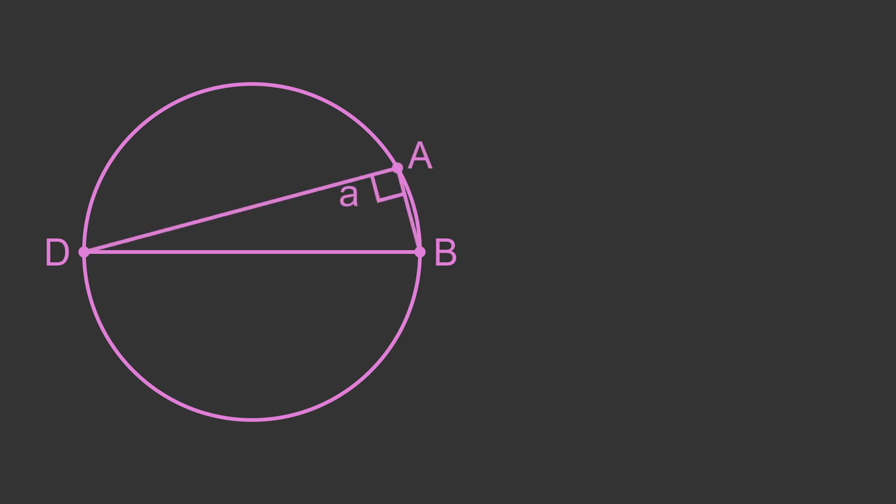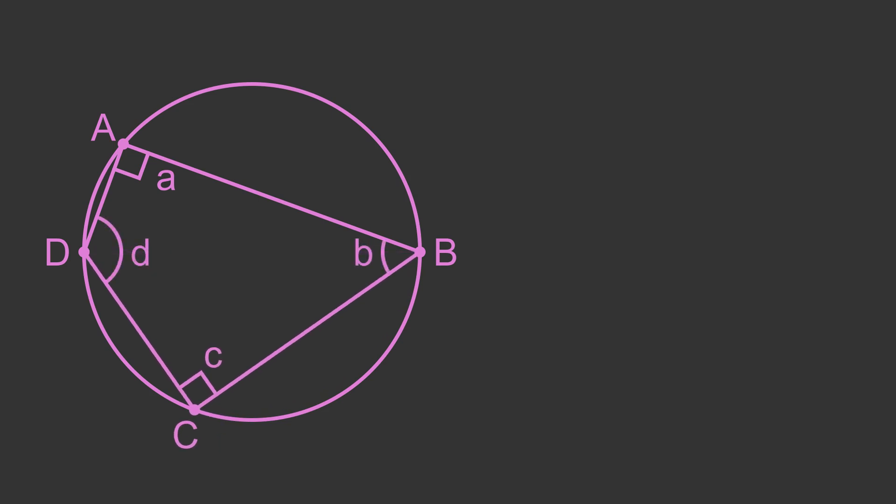This means that angle A will always be a right angle, no matter where on the circle the point A happens to be. It also means that angle C will always be a right angle, no matter where the point C happens to be. This gives a few interesting cases.